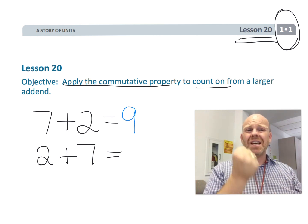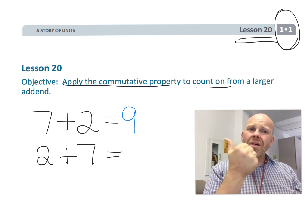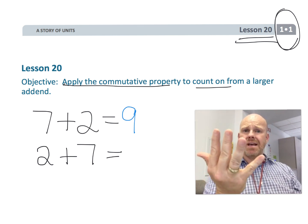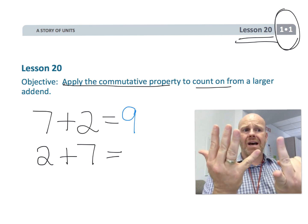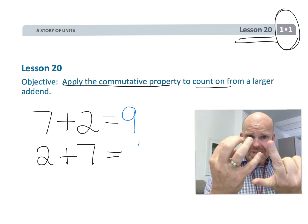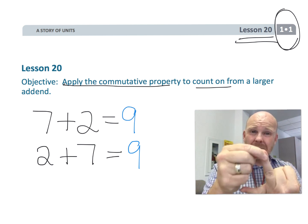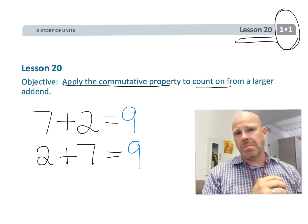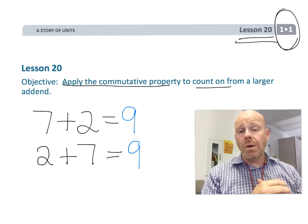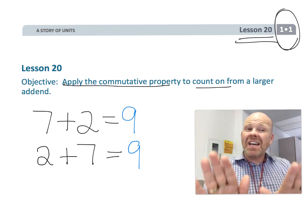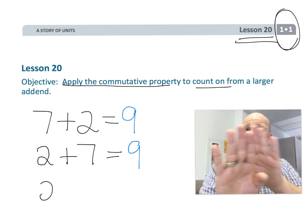Otherwise students would see two plus seven and think that they have to say two, three, four, five, six, seven, eight, nine. Yes, they've counted up to seven and the answer is nine, but that's not the most efficient way. Really what we want is students to understand that they can use the commutative property, take that two plus seven and reverse it to seven plus two.